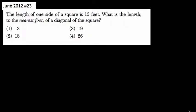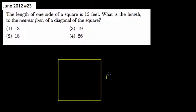Okay, we're told the length of one side of a square is 13 feet. So sketching this out, we have a little square here. And we're told each side is 13 feet. They want to know what is the length to the nearest foot of the diagonal of the square.